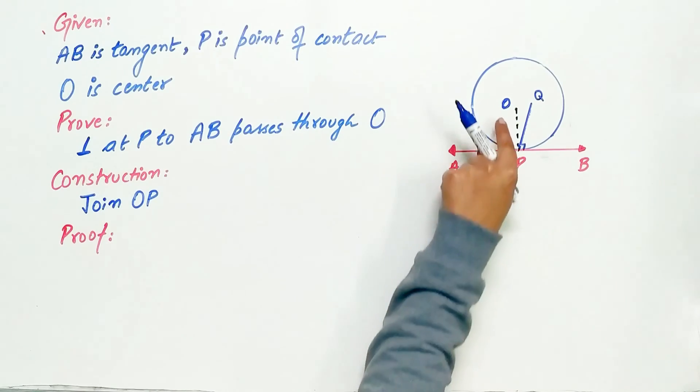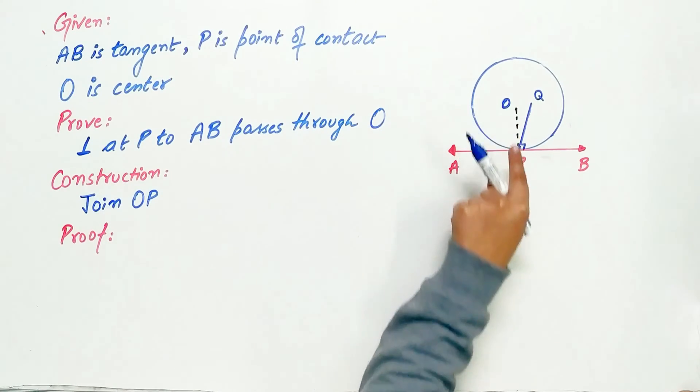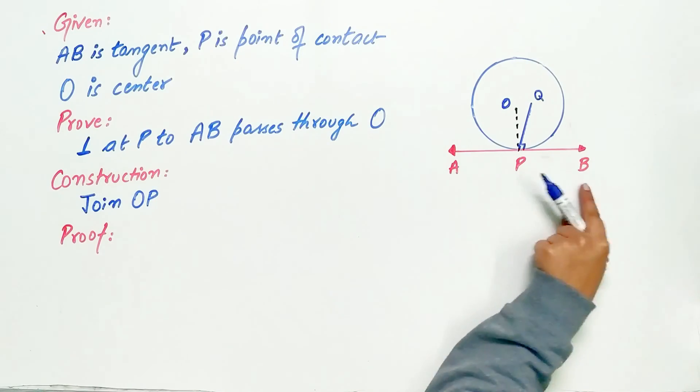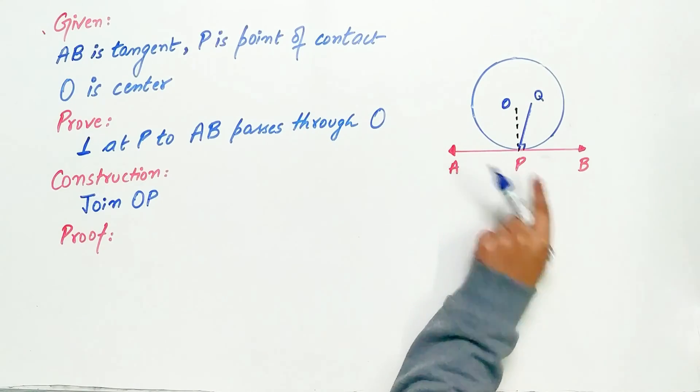Now listen carefully. O is the center of circle, OP is the radius of circle and AB is a tangent to the circle.